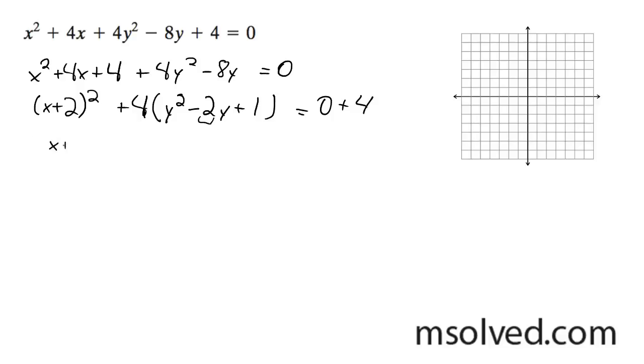So here I'll write this out: x plus 2 squared plus 4 times y minus 1 squared is equal to 4. I'm going to divide everything by 4. So I get x plus 2 squared divided by 4 plus y minus 1 squared is equal to 1.